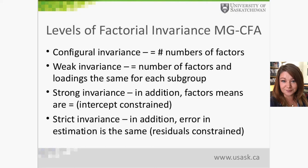Factorial invariance starts with the lowest level of evidence — configural invariance — which asks: for each subgroup, are there an equal number of factors? For the CES-D 10, that would be the two-factor structure. Is that two-factor structure similar across subgroups such as English and French? The next level is weak invariance, which asks not only whether there are an equal number of factors, but whether the factor loadings are the same for each subgroup — that is, are the items contributing to the latent variable in the same way for each subgroup?